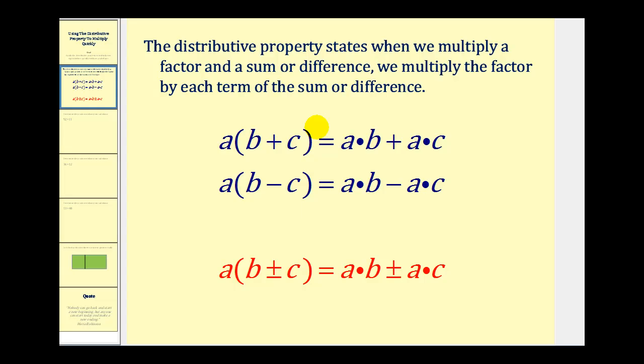The distributive property states when we multiply a factor and a sum or difference, we multiply the factor by each term of the sum or difference. So if we have a times the quantity b plus c, we're going to have a times b plus a times c. And if we have a times the quantity b minus c, we'll have a times b minus a times c.